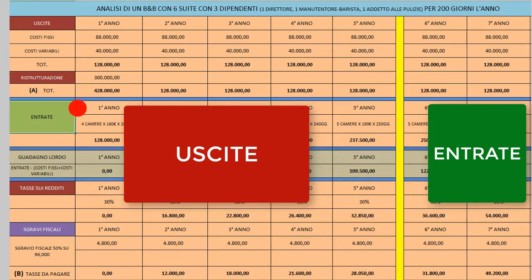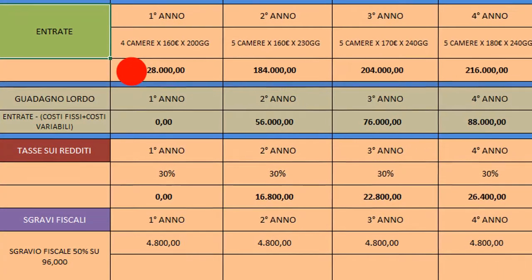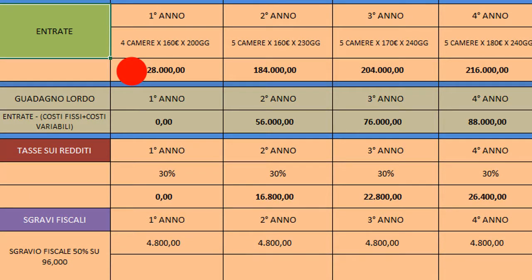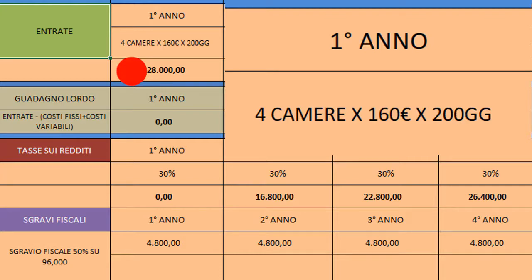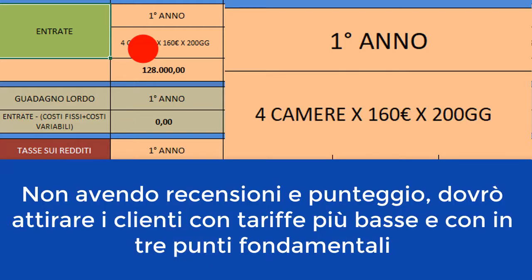Poi c'è una parte delle entrate. Essendo una struttura giovane, appena nata, non posso pretendere di occupare tutte e sei le suite. Ho previsto che nel primo anno occuperò soltanto quattro camere, con una tariffa molto più bassa rispetto alle altre strutture, proprio per catturare i clienti e strapparli anche ad altre strutture.